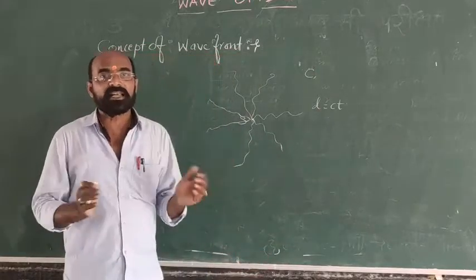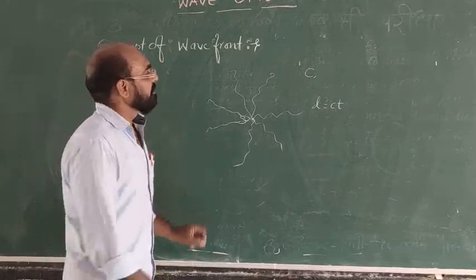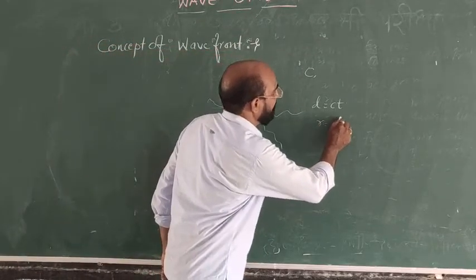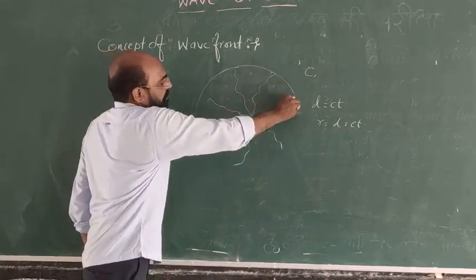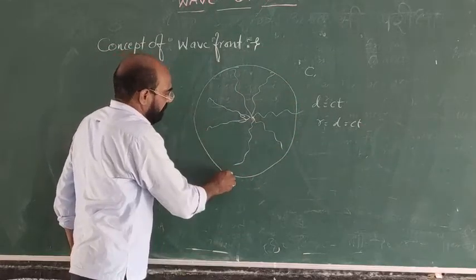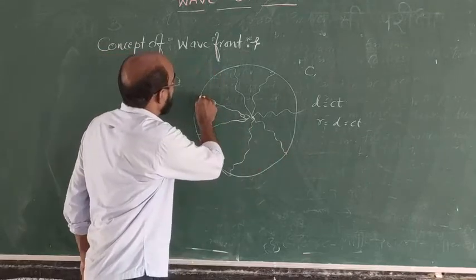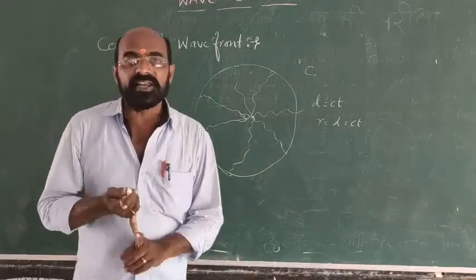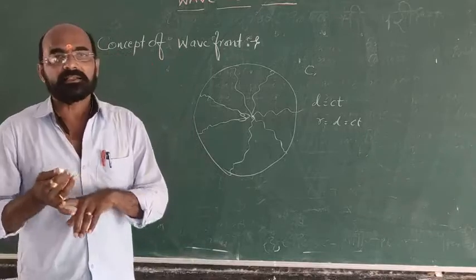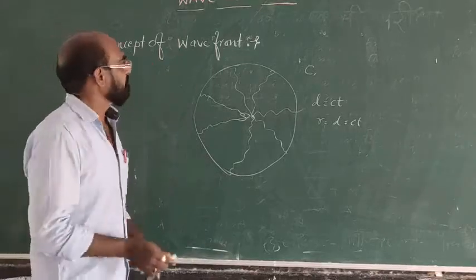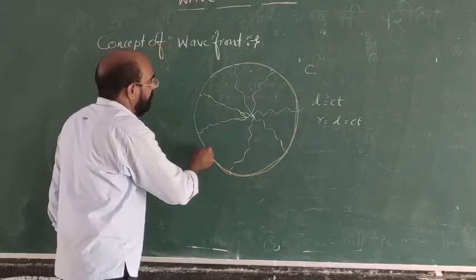Let us draw a circle of radius R, which is R equal to D, which means it is CT. If you draw a circle, on this circle, all the points are coming from the light source and are in the same state of vibration. They are in same phase, they have same amplitude, and they have same angle. That is also called as phase. This circle contains the points which are in the same state of vibration.